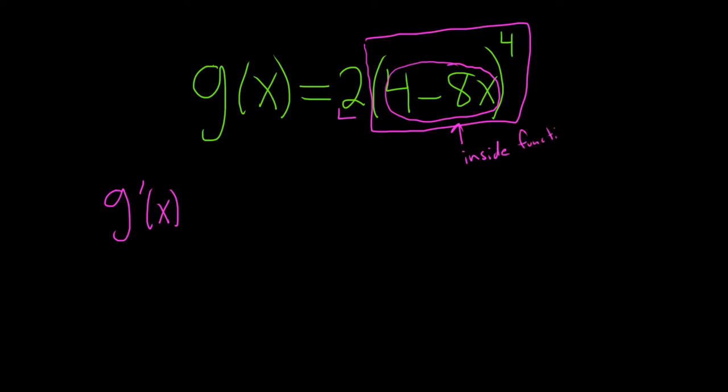When you take the derivative using the chain rule, you take the derivative of the outside and then leave the inside untouched. That's the first step. So we do 4 times 2 because of the power rule. That gives us 8.